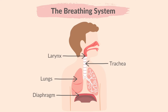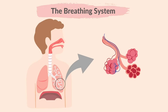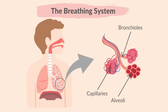This is the diaphragm, a flat sheet of muscle under the lungs which helps change the volume of the chest during breathing. These are bronchi, which are tubes that branch out into two from the trachea, carrying air from the trachea to the lungs. These are bronchioles, which are smaller tubes branched off from the bronchi, leading to the alveoli — tiny air sacs surrounded by capillaries where gas exchange takes place.